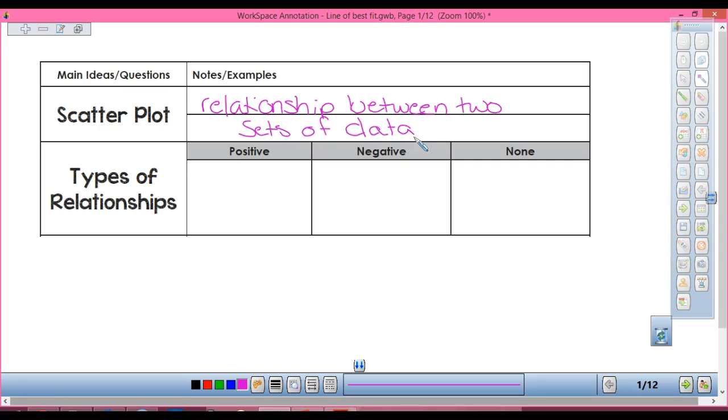There's some different types of correlations, or types of relationships. We have a positive, and we call these relationships correlations. Write that in there, because you're going to have to know that this relationship is called a correlation.